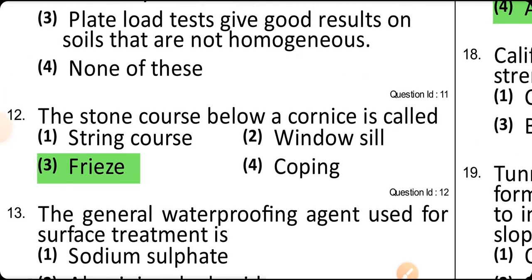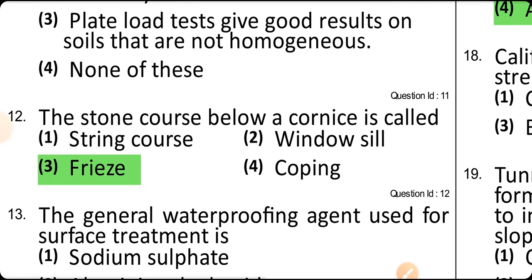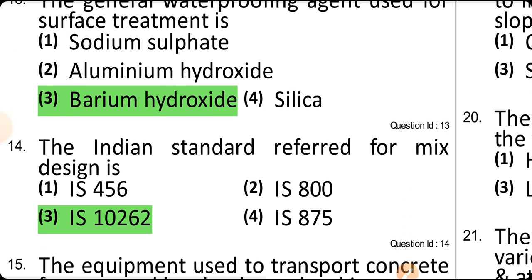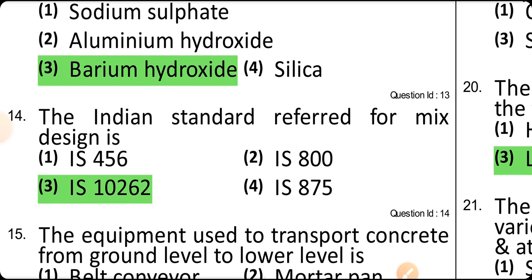The stone course below a cornice is called a frieze. The general waterproofing agent used for surface treatment is barium hydroxide. The IS code referred for mix design is IS 10262.